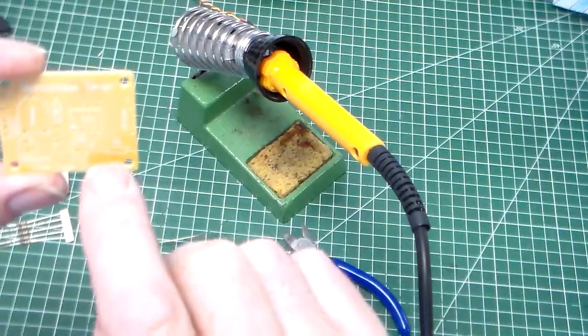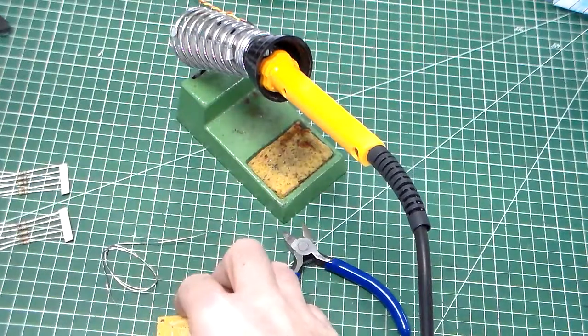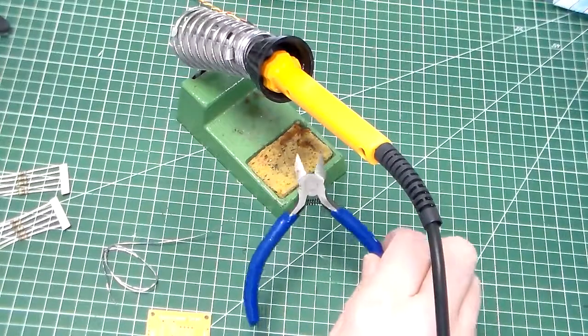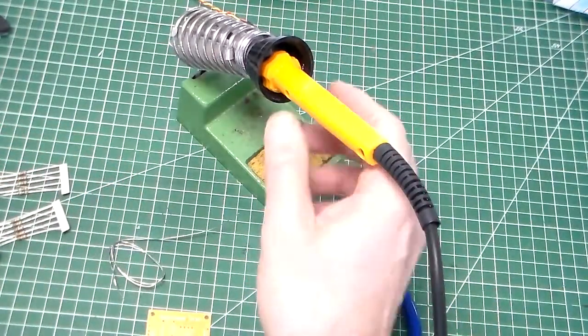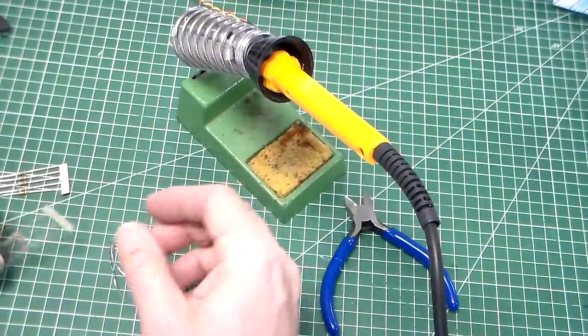Two resistors, R1 and R2. The equipment we're going to use: we've got a soldering iron, soldering iron stand, a pair of side cutters, and some solder. The first thing we're going to fit...